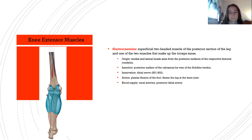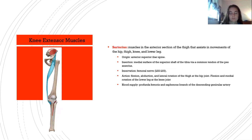The gastrocnemius is a superficial two-headed muscle of the posterior leg and one of two muscles making up the triceps surae. Origin: medial and lateral heads arise from the posterior surface of the respective femoral condyles. Insertion: posterior surface of the calcaneus via the Achilles tendon. Innervation: tibial nerve S1–S2. Action: plantar flexion of the foot and flexion of the leg at the knee. Blood supply: sural arteries and posterior tibial artery.